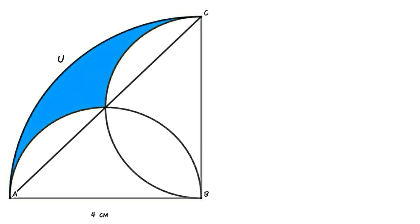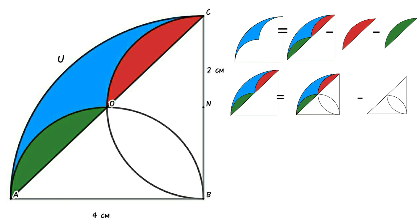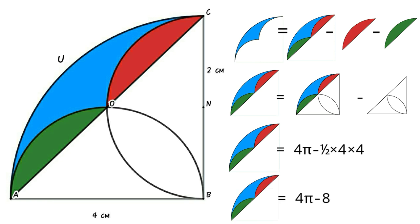Method 2: Connect A and C, then we can create segment AUC. Area of blue region equals area of segment AUC minus area of red segment minus area of green segment. Area of segment AUC equals area of quarter circle ABC minus area of triangle ABC, which equals 4π − (1/2)(4)(4) = 4π − 8.